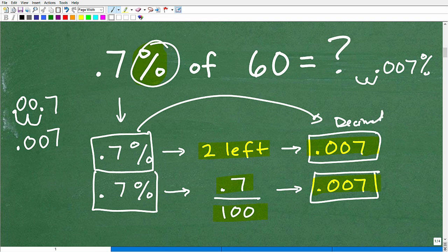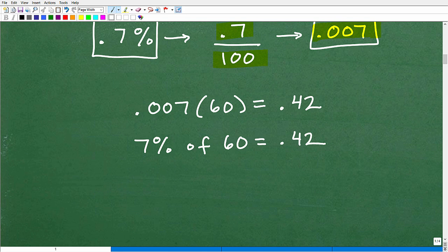Okay, now what are we going to do with that? Well, we're going to take our decimal value 0.007 and multiply by 60. All right, and here we go. 0.007 multiplied by 60 is equal to 0.42. And that is it. 0.7% of 60 is 0.42. But hopefully at this stage of the game, you feel pretty confident about solving basic percent problems.